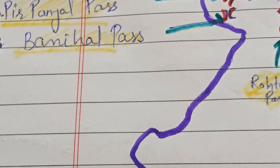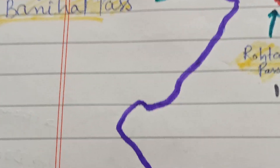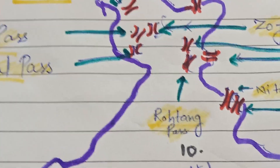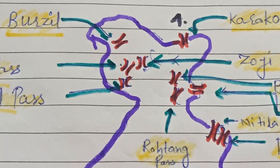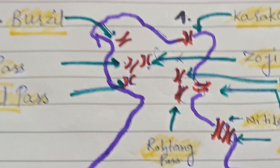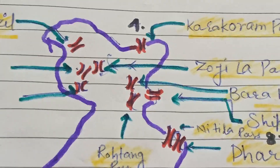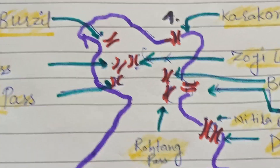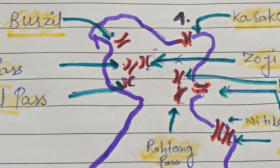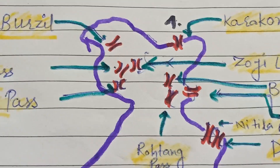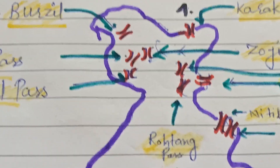Srinagar is joined with Jammu. We are going to study Karakoram. Karakoram is found in the Siachin Glacier region. Zozila Pass connects Srinagar. Srinagar is also joined to the Zanskar Range and Jammu Kashmir.